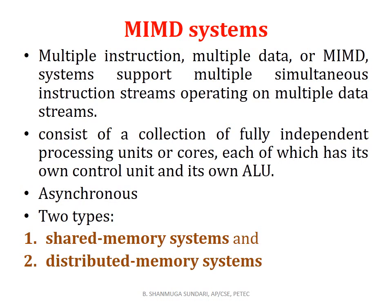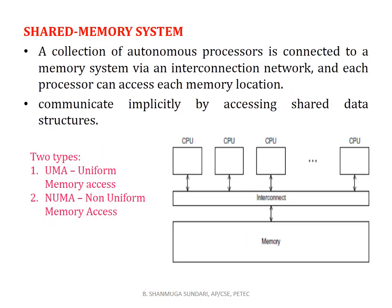The next concept is MIMD systems — Multiple Instructions Multiple Data. It supports multiple simultaneous instruction streams operating on multiple data streams. There are two types: shared memory systems and distributed memory systems. A shared memory system is a collection of autonomous processors connected to a memory system via an interconnection network, where each processor can access each memory location and communication is done implicitly by accessing shared data structures.